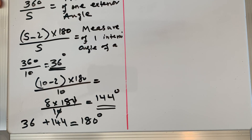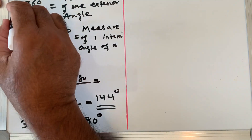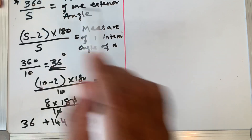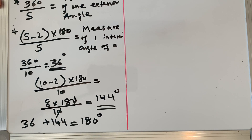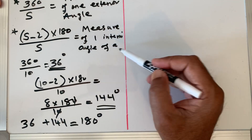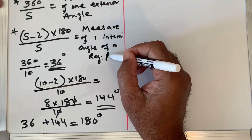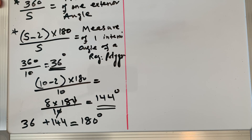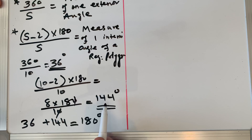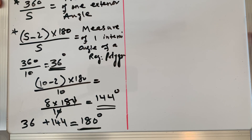To revise: find the measure of the interior and exterior angle of a regular decagon — a 10-sided figure. The formula is 360 divided by n for the exterior angle, and (n minus 2) times 180 divided by n for the interior angle. We substitute s equals 10, get our answers, and verify that the exterior plus interior angle equals 180 degrees.